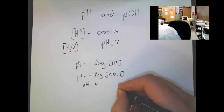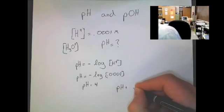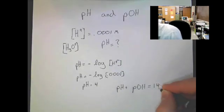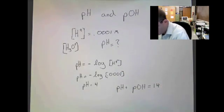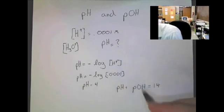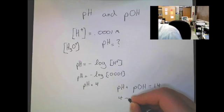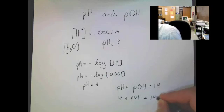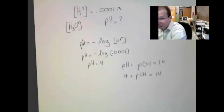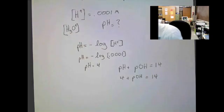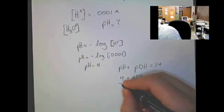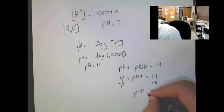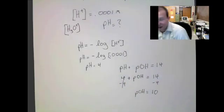There's also a relationship between them. pH plus pOH always will add up to 14. So if we know the pH of this solution is 4, we can very easily find the pOH. All we need to do is basically do a subtraction problem.